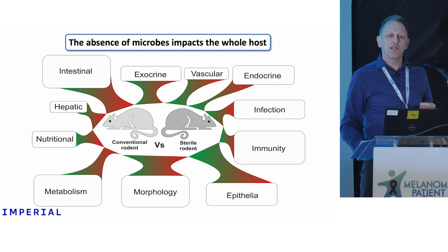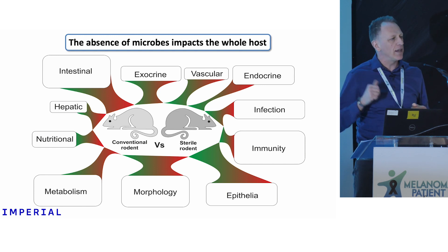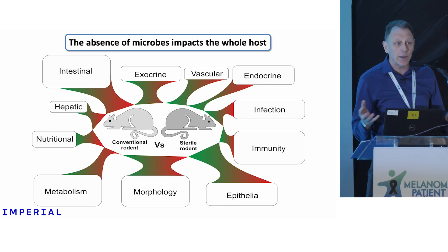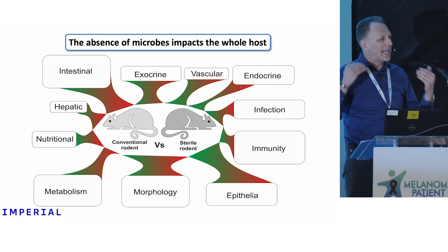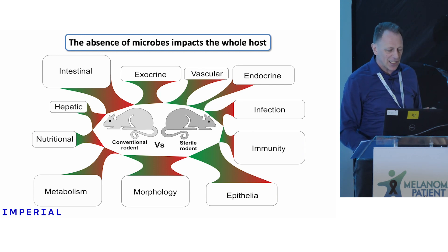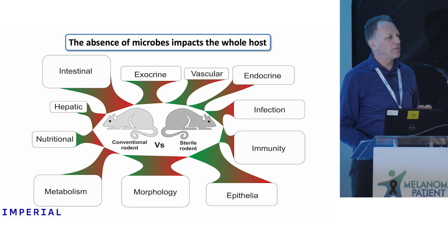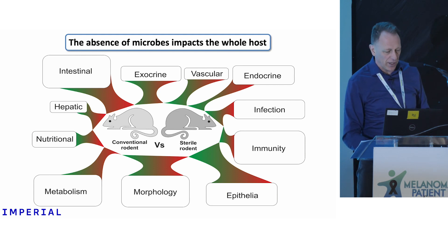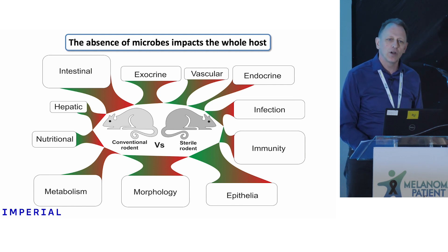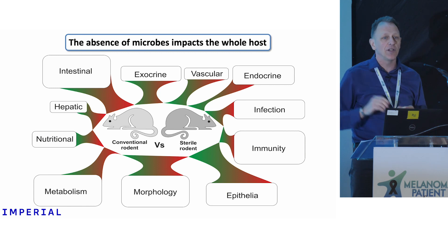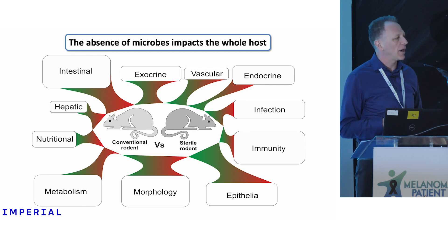One way we really know that the microbes in you are important is because we can rear rodents — mice and rats — in a totally sterile environment where they never see microbes. The exocrine system doesn't work as well, all your hormonal systems are affected by an absence of a microbiota, your liver doesn't work as well, your heart doesn't work as well, your brain doesn't work as well. Every single aspect of being a mammal is affected by an absence of the microbiota.